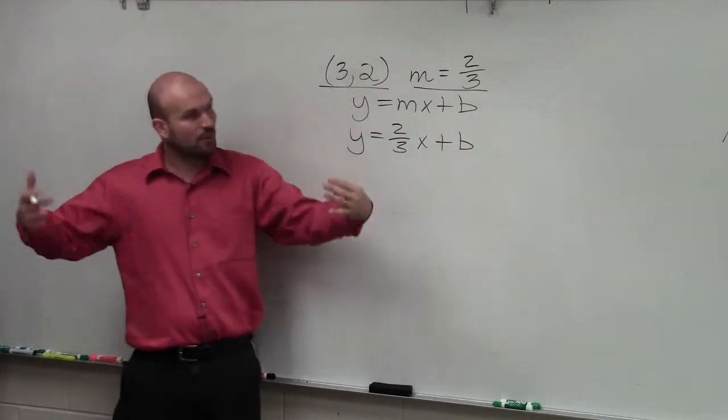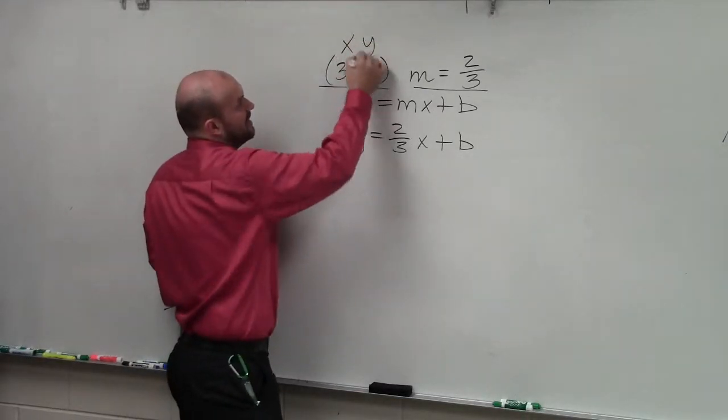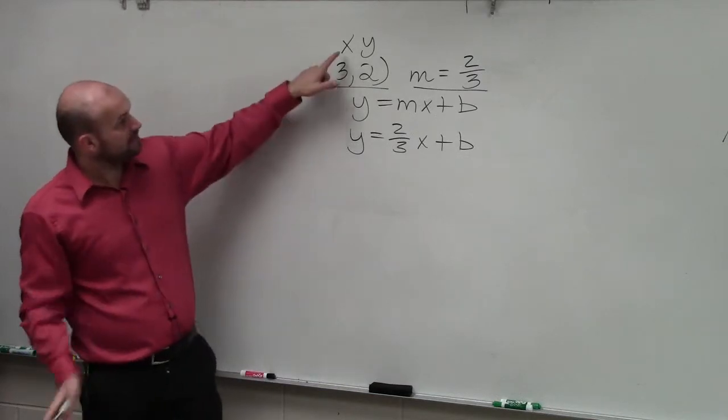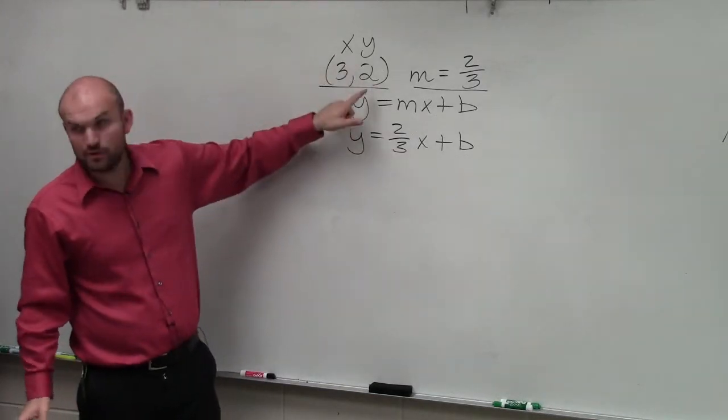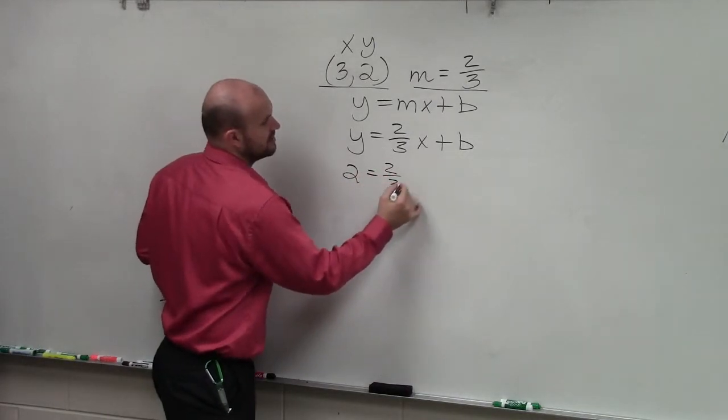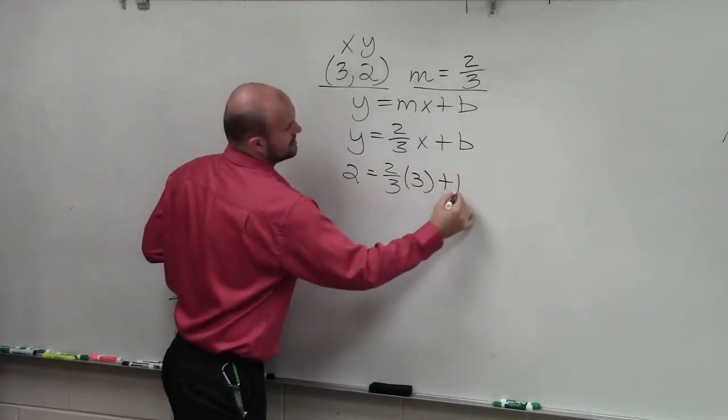The only thing it gives us is this point. Now, remember, that's a point on the coordinate grid. So that point represents x and y, right? So what I can do, though, is I can plug 3 in for x and 2 in for y. So I do 2 equals 2 thirds times 3 plus b.